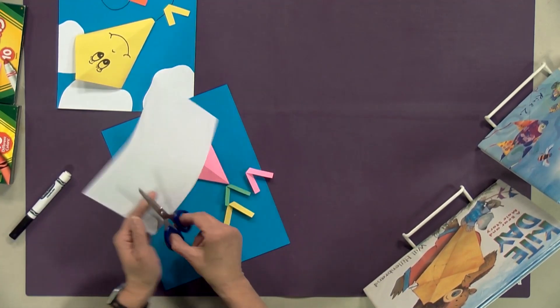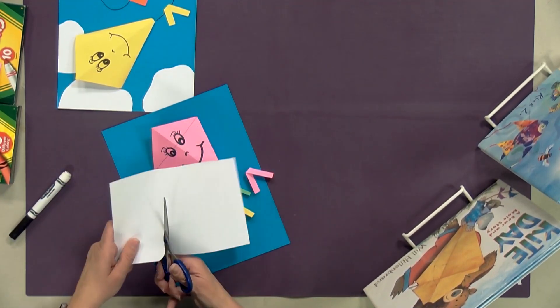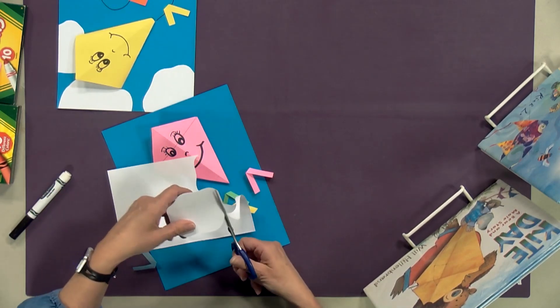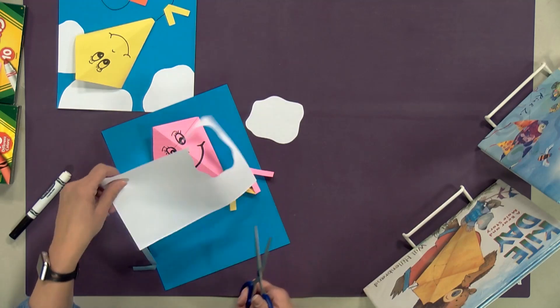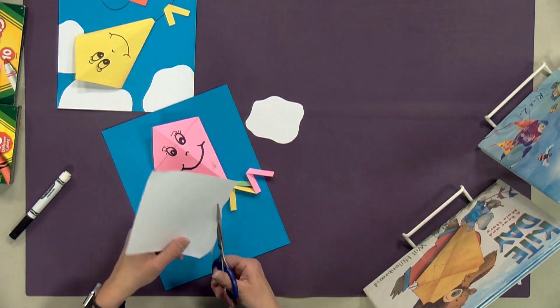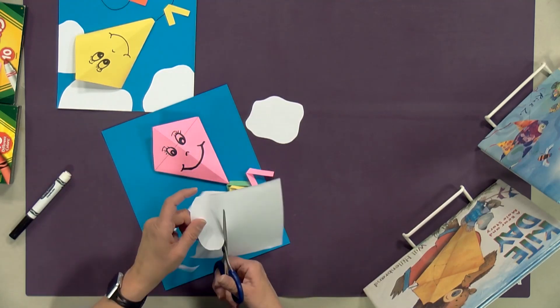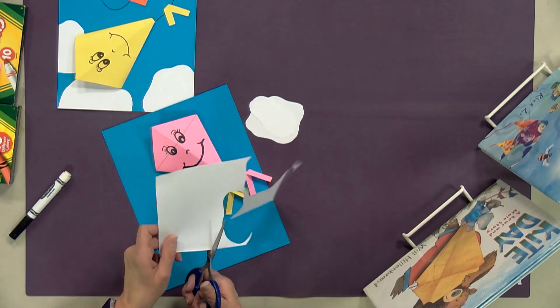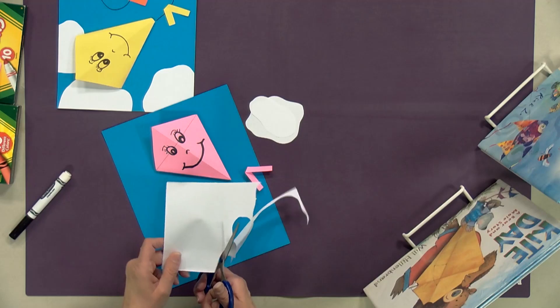The white is for us to cut out some cloud shapes. I'm just going to wiggle my scissors back and forth a little bit until I get something that I think sort of looks like a cloud. You can make big clouds, little clouds, long clouds, skinny clouds, whatever kind of cloud you want. Go ahead and cut me out some fluffy clouds here.